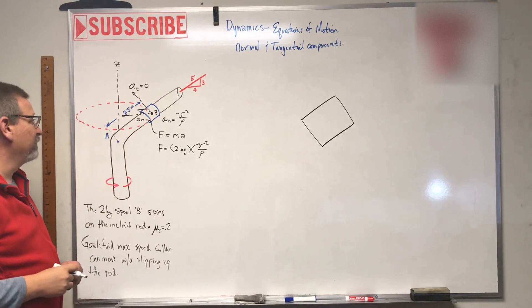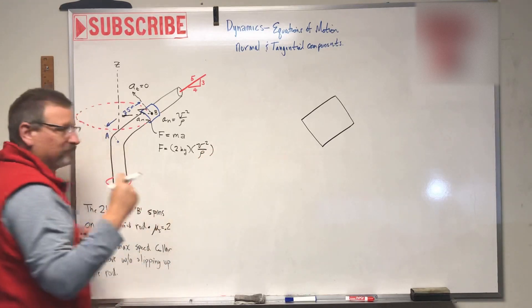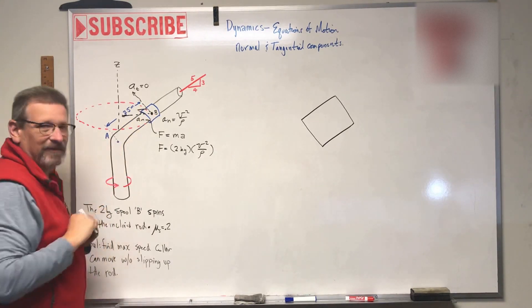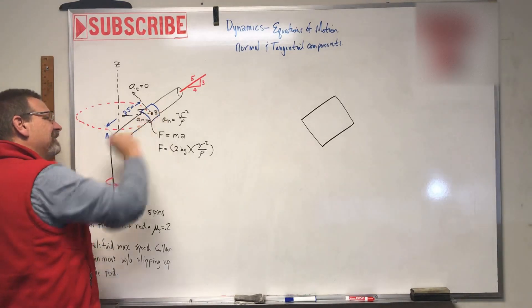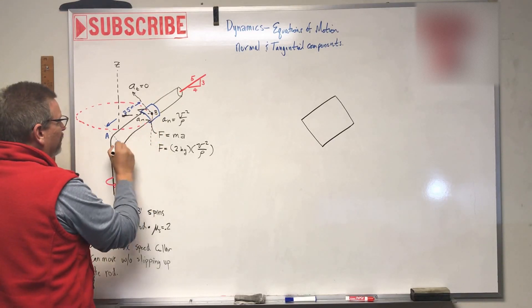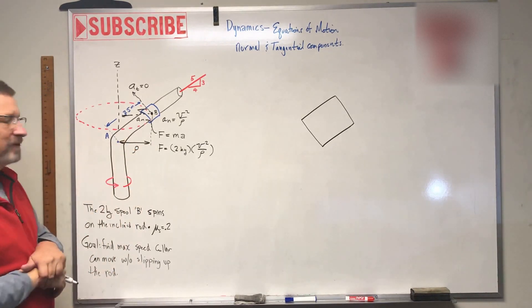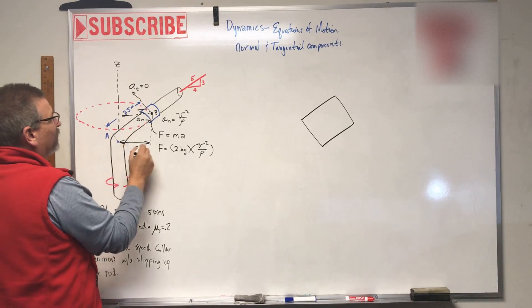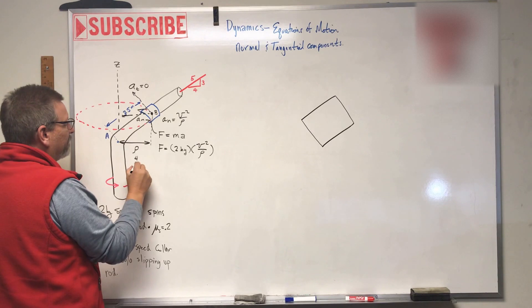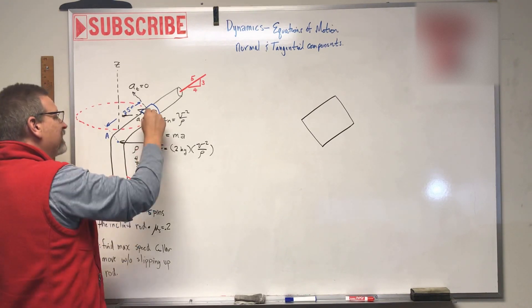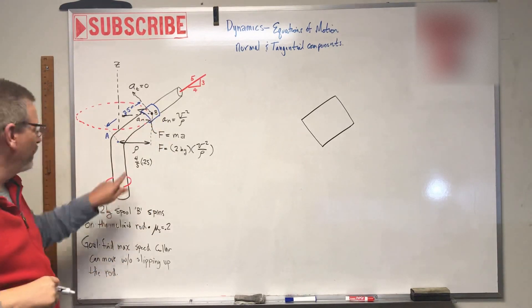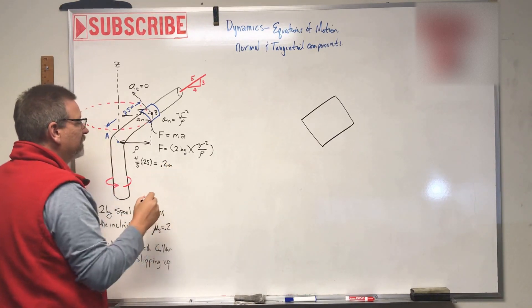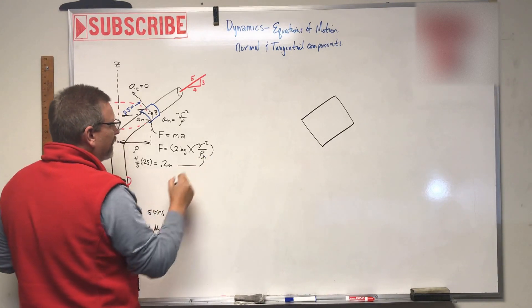Now here's a big mistake on this problem is what is rho. Rho is that radius that the thing is traveling around. Well you might be tempted to say it's 0.25, but it's not 0.25. 0.25 is the distance up that inclined rod. The real distance for rho is right here. This is rho. Can we calculate that? Well since we have a slope triangle here, this is a 3-4-5 slope, then this side over here must be the 4/5th side times the hypotenuse, which is 0.25. So 4/5ths of 0.25 is equal to 0.2, and that's meters.